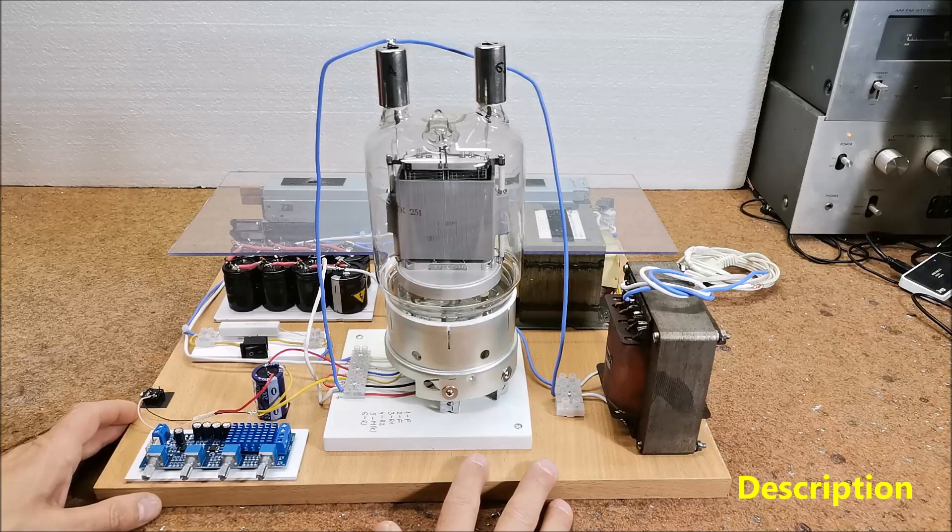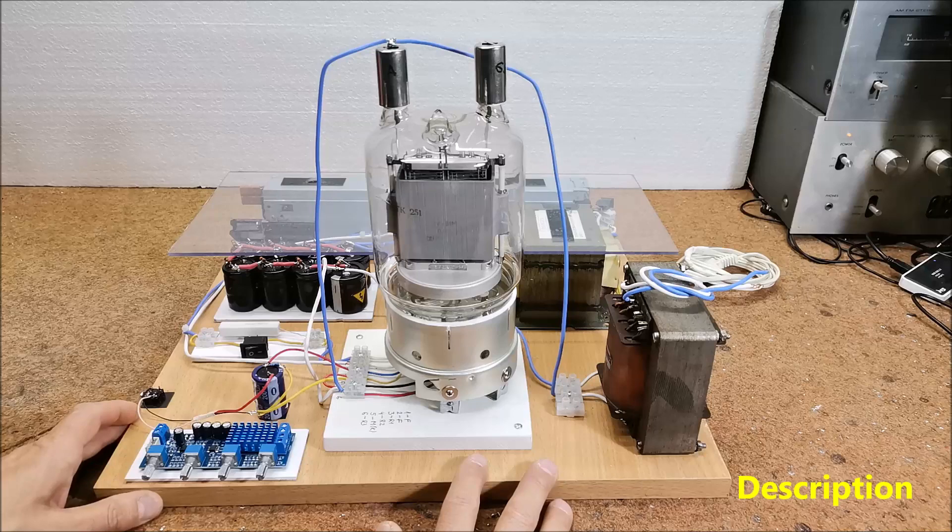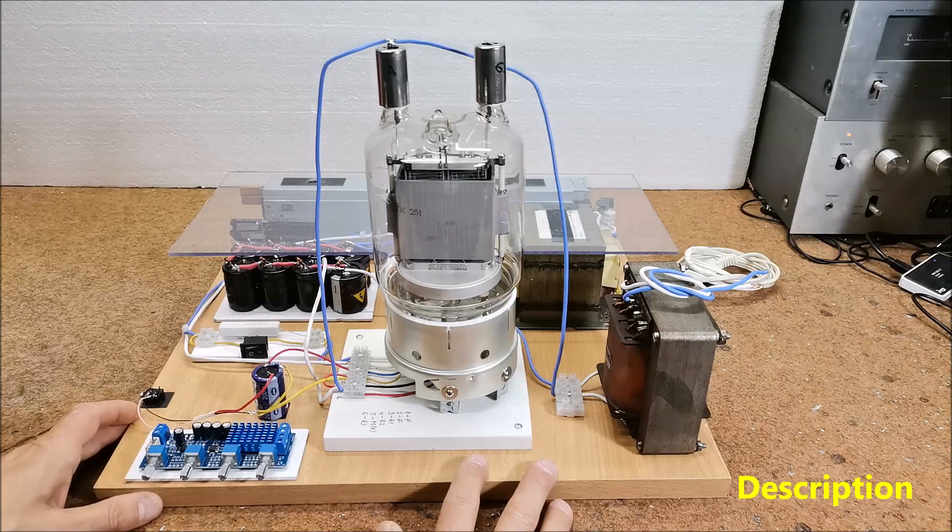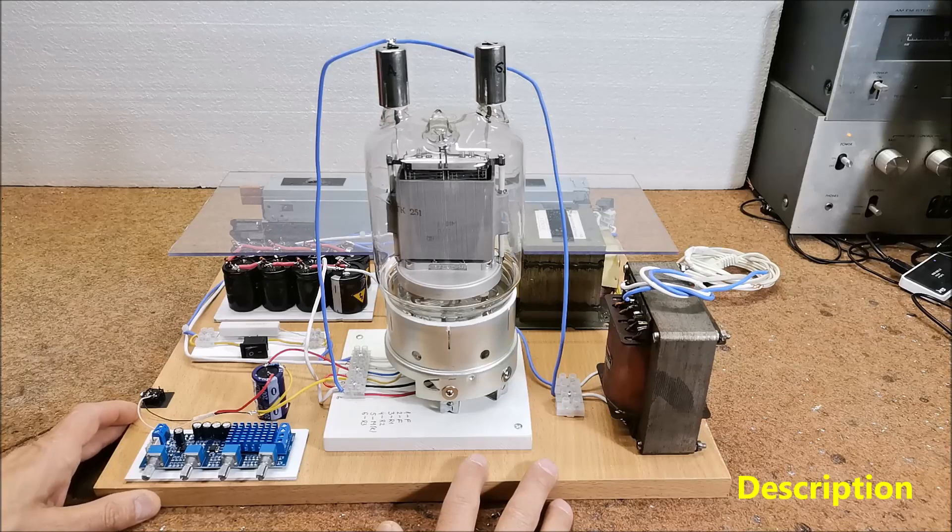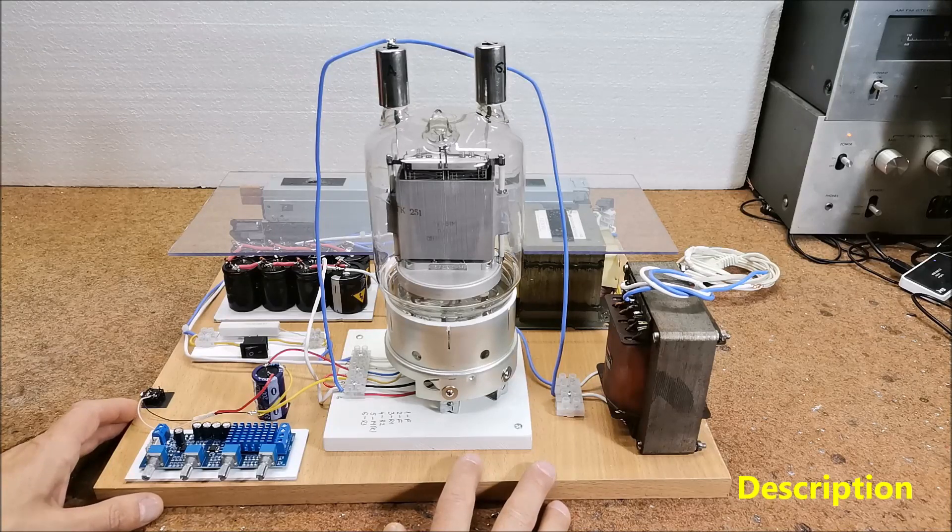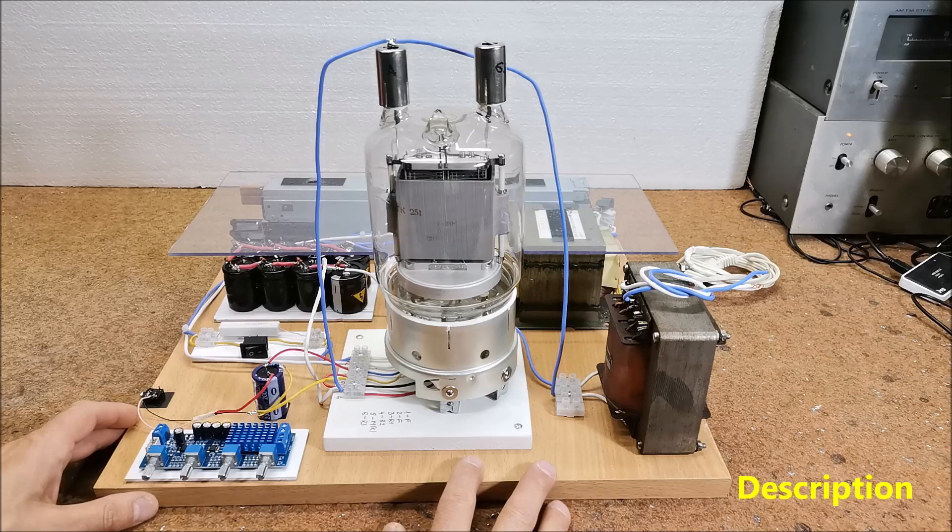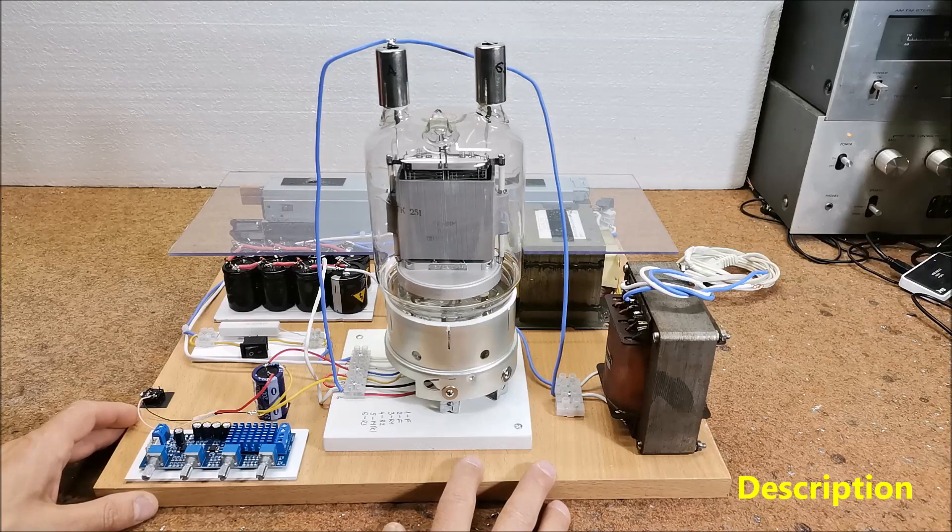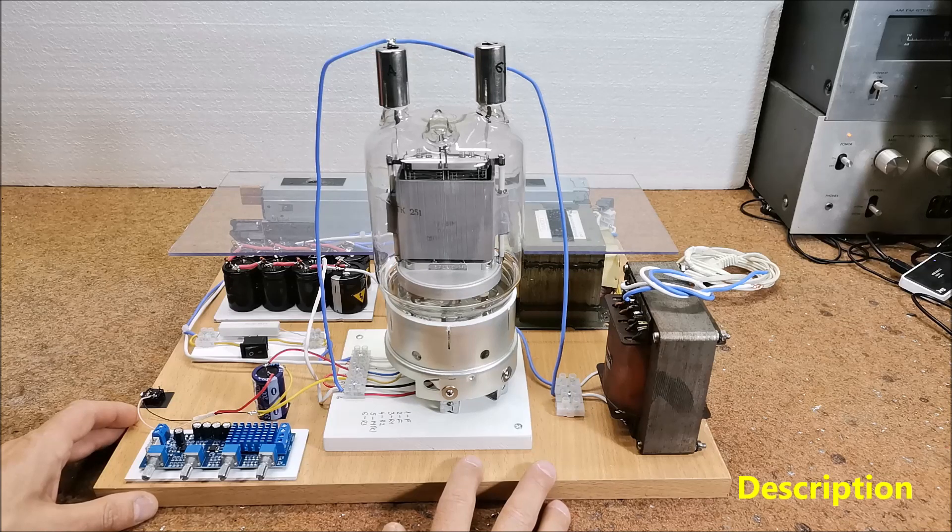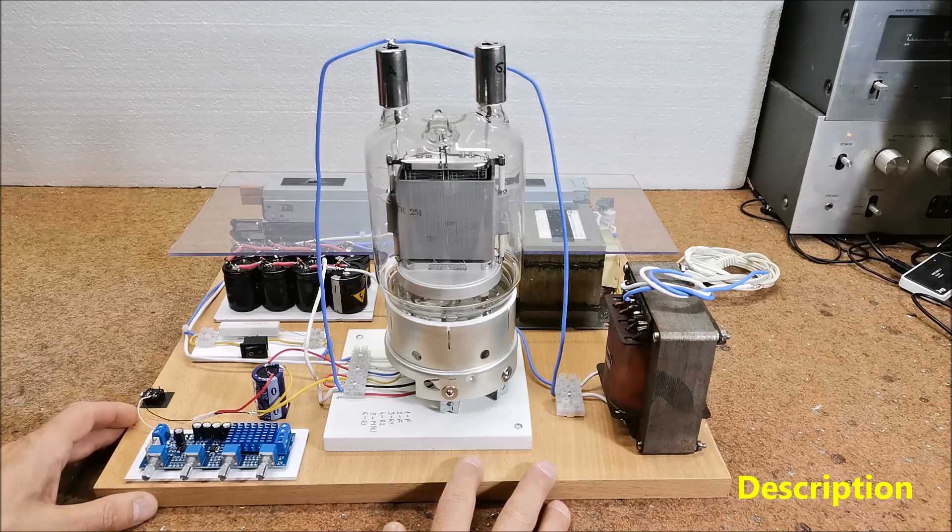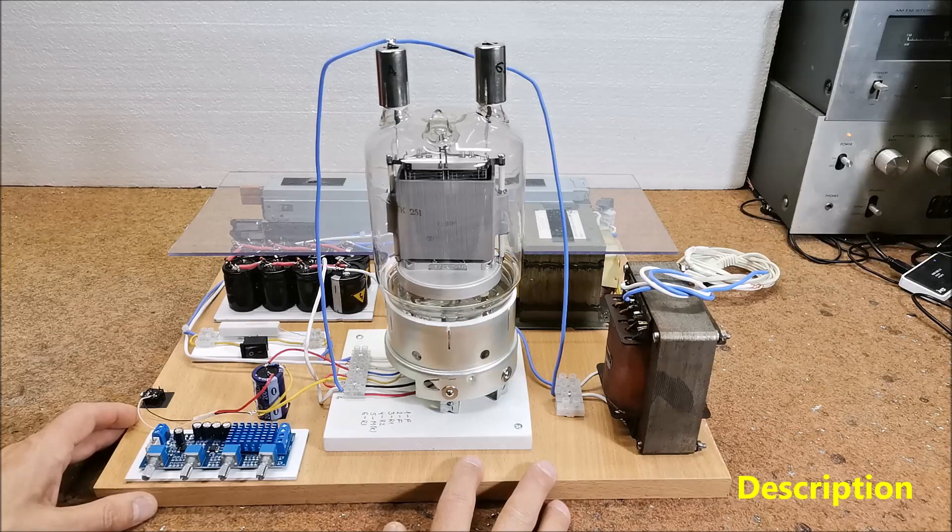Thus the distortions of the even harmonics, which are in fact the reason for the colored warm sound of the tube amplifiers, are amplified by the output transistor stage. But unfortunately these positive distortions occur most often in the output stage in the tube amplifiers, so the aforementioned hybrid amplifiers do not have very similar characteristics to the tube amplifiers.